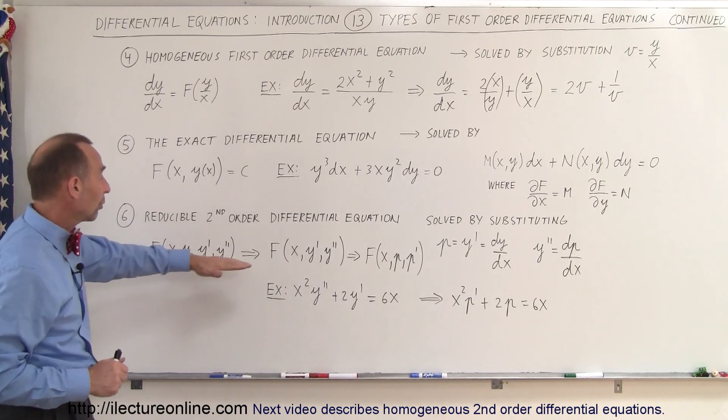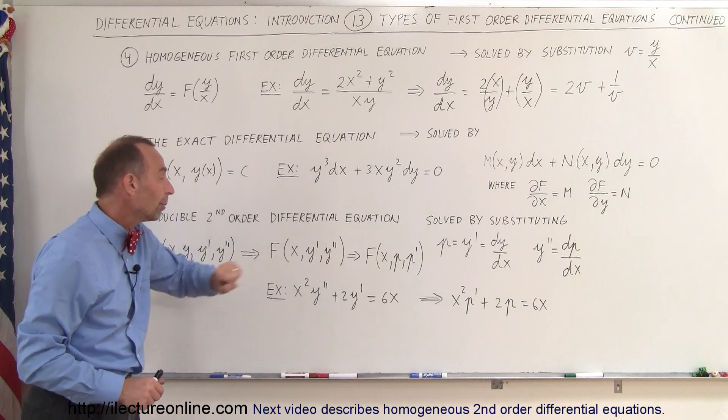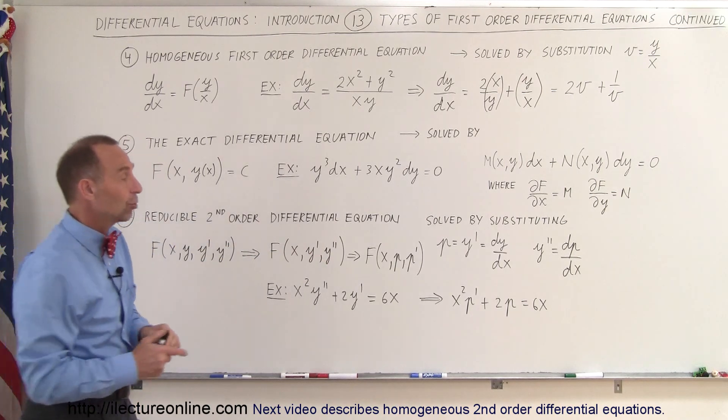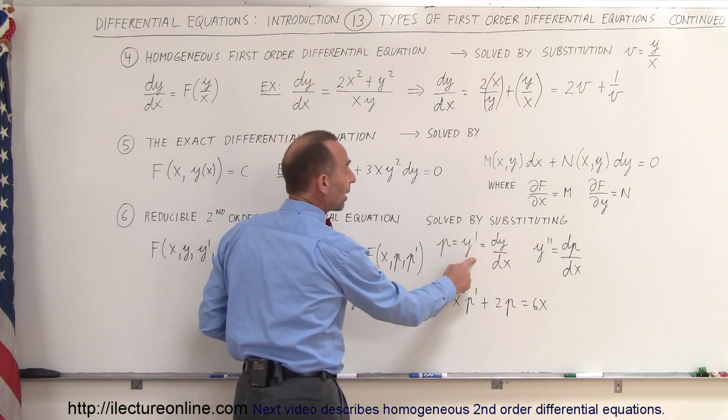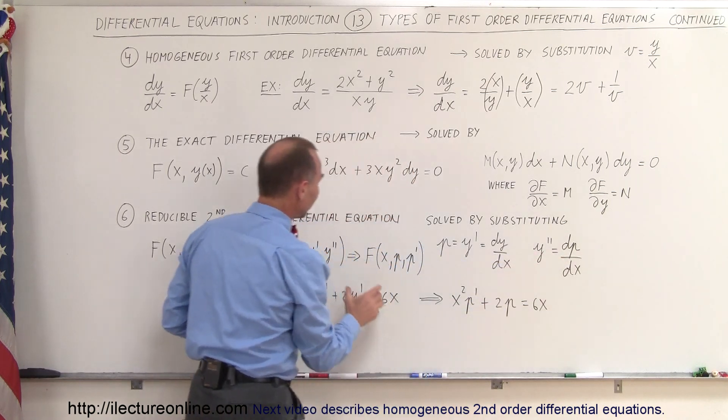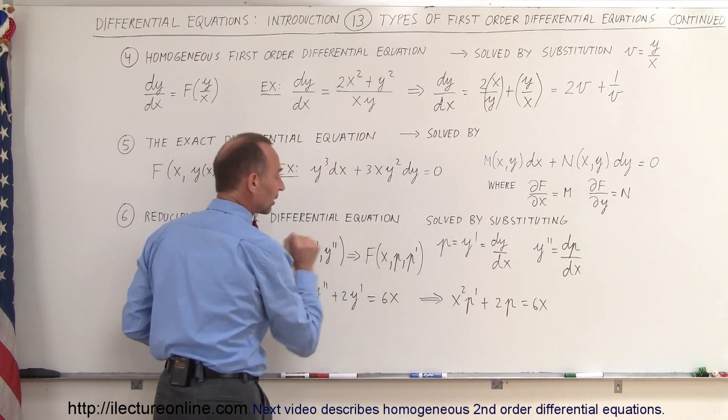Which of course immediately tells you that's a second-order differential equation. But if you can change it to an equation that looks like this, x, y prime and y double prime, and then if we make the substitution that p is equal to y prime, and that y double prime is dp/dx, then this equation will become something like that.